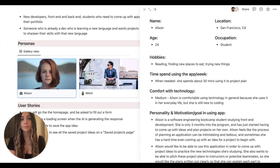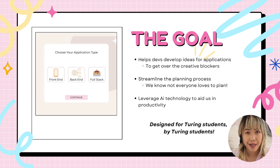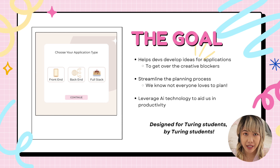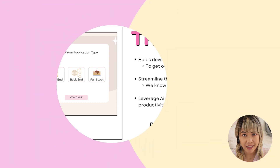This app is designed to streamline the project planning process for junior developers like Turing students. By leveraging advanced AI technology, this app assists users in creating comprehensive project plans and generating innovative ideas tailored to their chosen project type and preferred technologies.